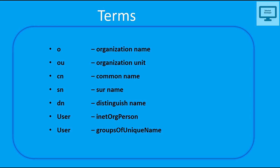Let's review the key LDAP terms: O stands for Organization Name, OU means Organization Unit, CN means Common Name, SN is Surname, DN means Distinguished Name. We also have inetOrgPerson and user, and group of unique names. The collection of both can be called an object.